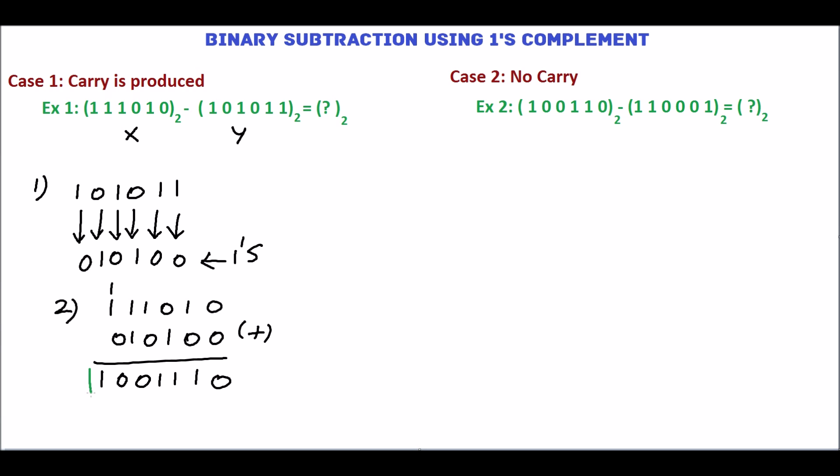In step 2, carry is produced. This carry is called the end-around carry. Add this carry with the LSB of the sum.